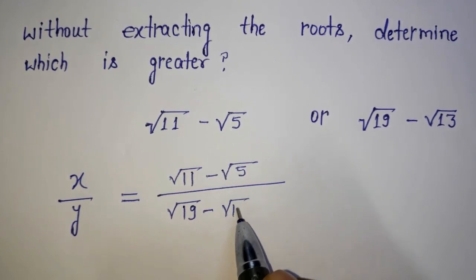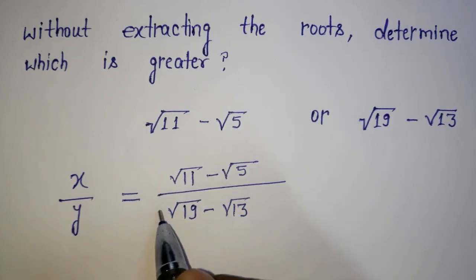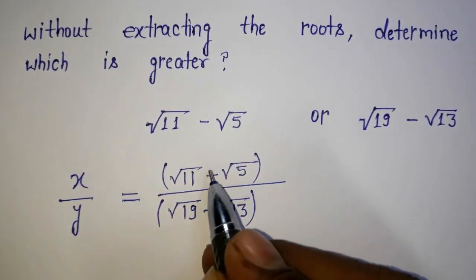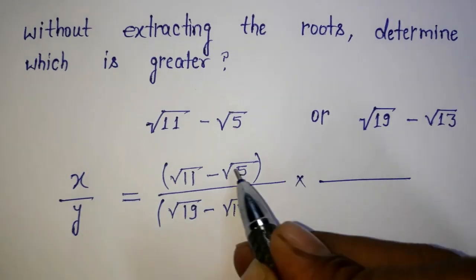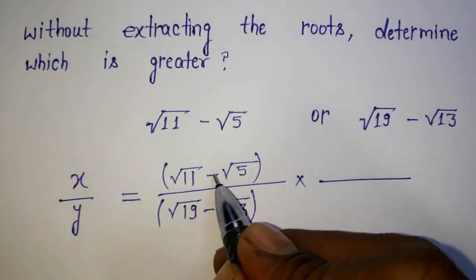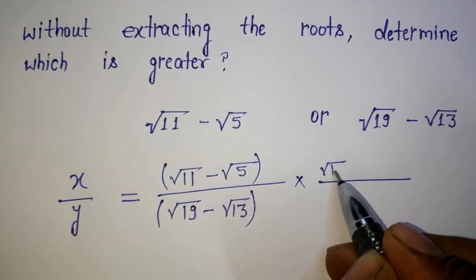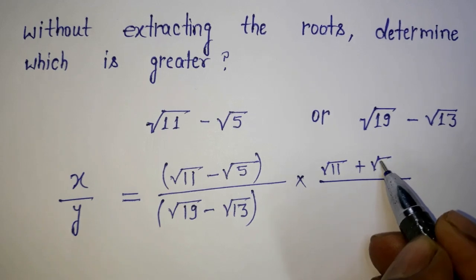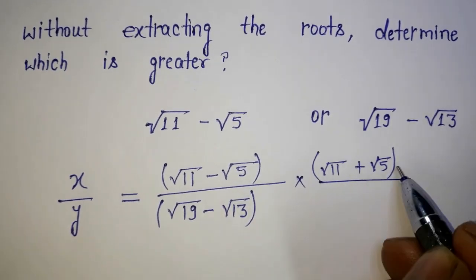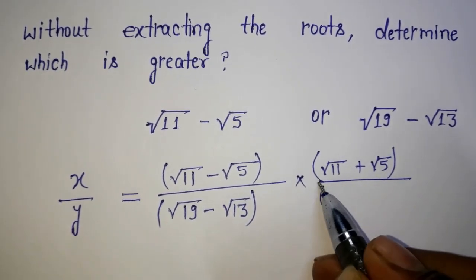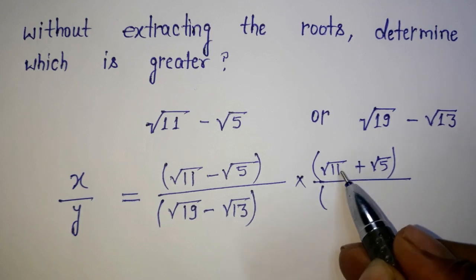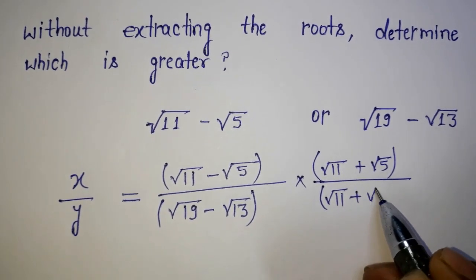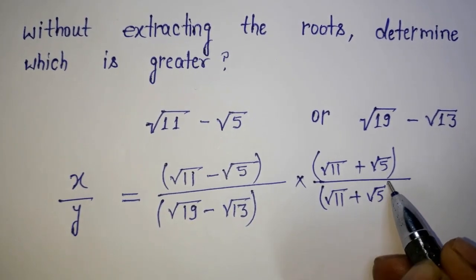I am going to rationalize this expression. There is a minus sign, so I am going to change that sign and this new number generated I am writing on the denominator in this way.